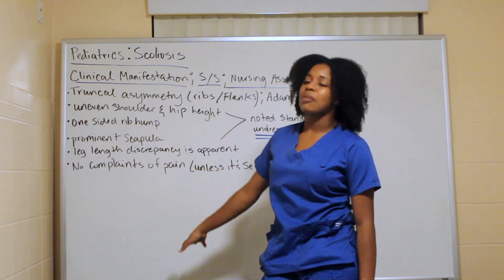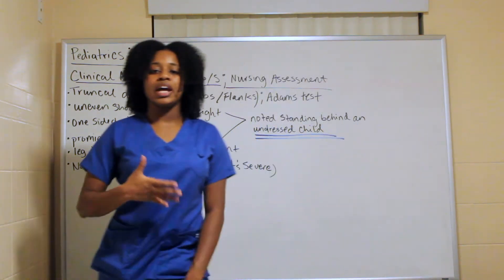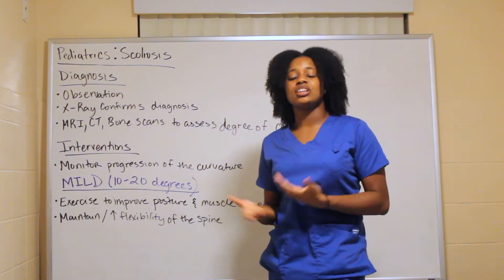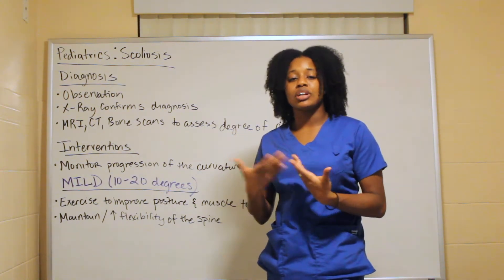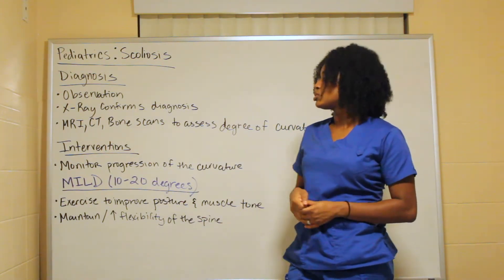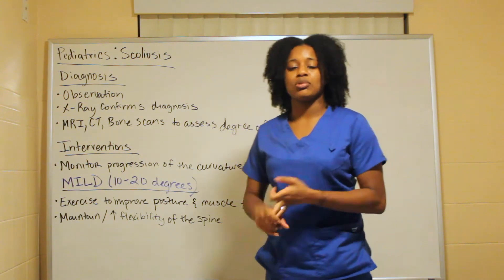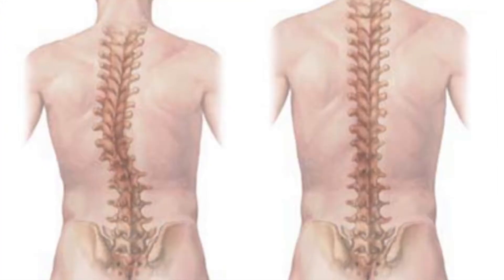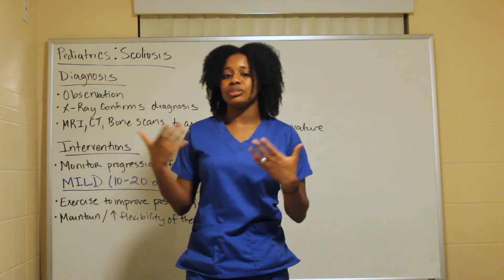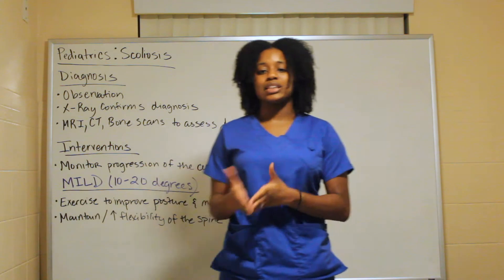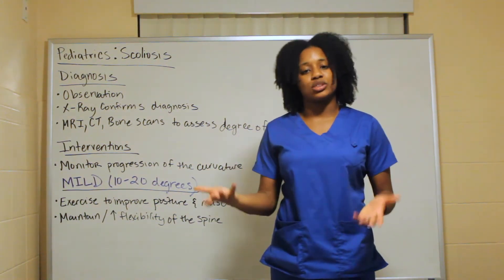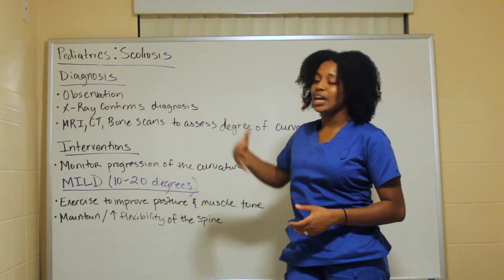Most of the time the patient won't complain of pain; if they do, it indicates a severe case. For diagnosis, similar to clubfoot, it's largely based on visual observation, but an X-ray confirms the diagnosis. MRI, CT scan, or bone scan can also be used to determine the degree of curvature, since anything greater than 10 degrees is abnormal.